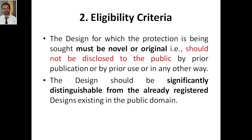When you choose Apple over other products, it's because of its distinctiveness. So the basic criteria for industrial design is: it has to be novel or original. Why? Only then can people distinguish your work from others. You must also make sure your work was not published before you register it. The design for which protection is being sought must not be disclosed to the public by prior publication, prior use, or in any other form.